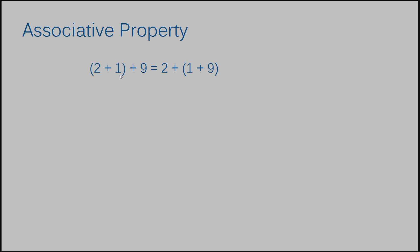Two plus one is three, and three plus nine is twelve. Over here, one plus nine is ten, and ten plus two is twelve. The associative property says that you can group any two numbers as long as your operation is addition or multiplication. You may be thinking — why would you want to change what numbers are grouped? Here's why.